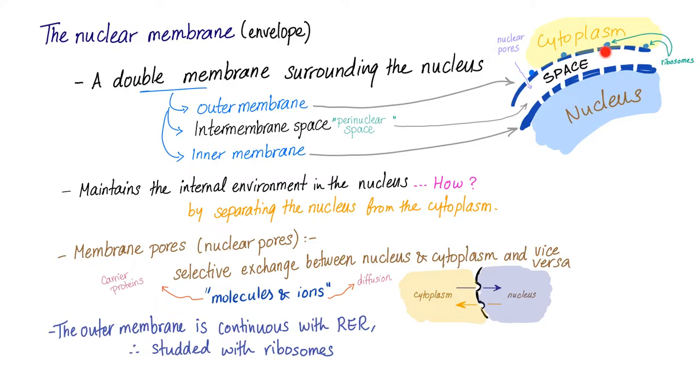The outer membrane of the nuclear membrane has ribosomes and is continuous with the rough endoplasmic reticulum, which also has ribosomes. The nuclear membrane maintains the internal environment in the nucleus by separating the nucleus on the inside from the cytoplasm on the outside. Membrane pores or nuclear pores allow selective exchange between the nucleus and the cytoplasm and vice versa. It allows selective exchange of both molecules and ions. Ions by diffusion, because they are small, big molecules require carrier proteins.